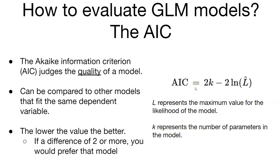We've actually seen some AIC values in R output previously in class. Generally, if you fit two models and find a difference of two units or more, you would prefer the model with the lower AIC. The good thing about AIC is you can compare multiple models together as long as you fit them to the same dependent variable. AIC will be a handy tool as we build more complex models.